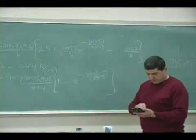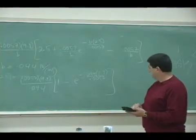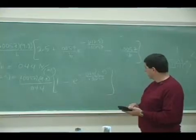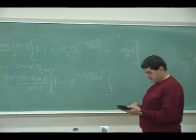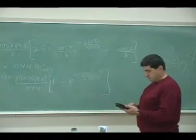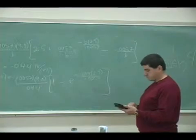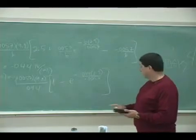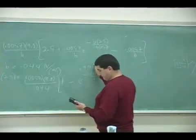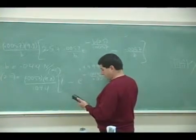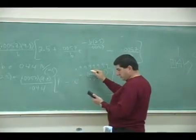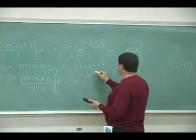1 minus e to the power negative 0.044 times 2.5 divided by... this comes out to be almost 1. How many zeros and nines is that? 8 nines.